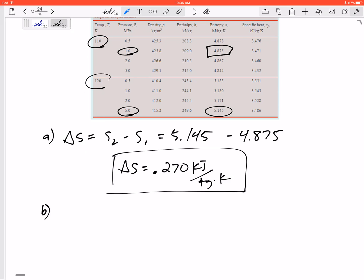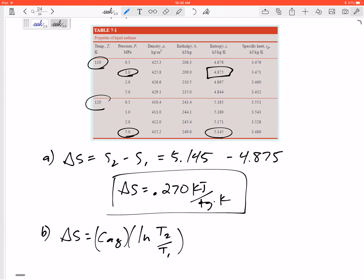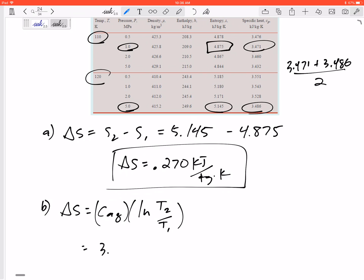Now, what if we wanted to use that equation? Delta S is C average times ln T2 over T1. Alright, well what is the C average? Well, the specific heat at the initial state is right there. The specific heat at the final state is right there. So the average of the two, 3.471 and 3.486 divided by 2. The average, I've got 3.4785 KJ per kg K times natural log T2 over T1.